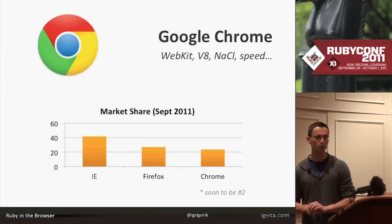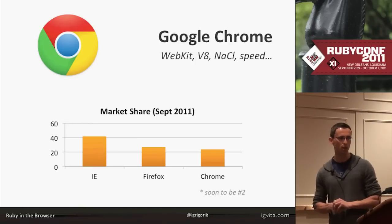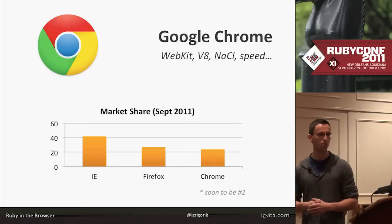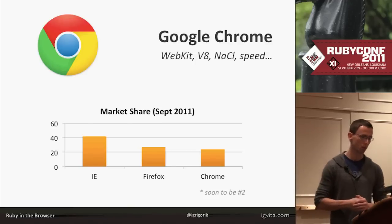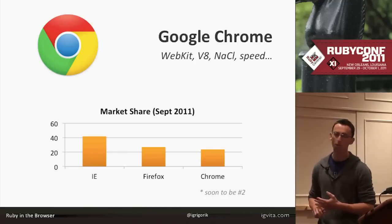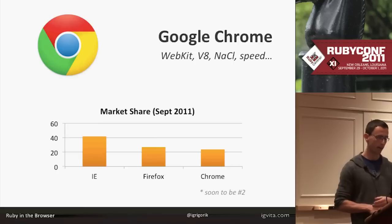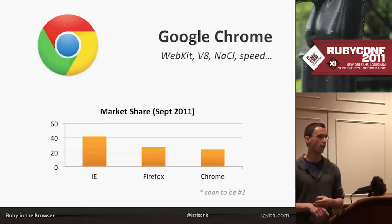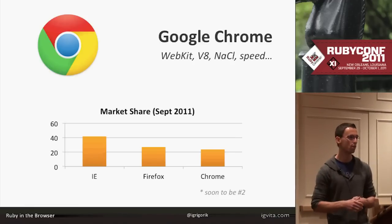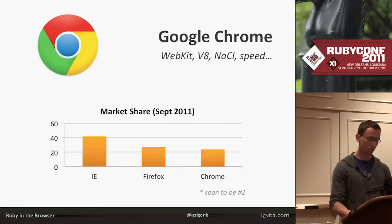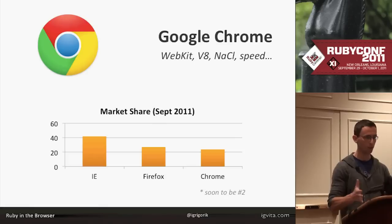Then Google Chrome comes along, which is actually fairly recent. The interesting innovation they did was: every tab is going to be a standalone process. Instead of having one process and many tabs, every single tab is isolated. This gives you nice things like each tab has its own security sandbox — if something goes wrong in one tab, we can just kill that one tab and everything's great. As of September, Chrome is about 26% across the internet and growing. Within a month or two, they'll actually be the second browser on the web, which is pretty amazing.